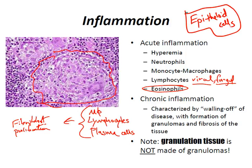Important: granulation tissue is not made of granulomas — these are separate entities. An abscess is a cavity filled with pus containing neutrophils, monocytes, macrophages, and liquefied cellular debris. An ulcer is loss of surface epithelium from acute inflammation of epithelial surfaces. A fissure is abnormal communication between two organs or between an organ and a surface. A scar is the final result of tissue destruction — collagen deposition resulting in altered structure and function.